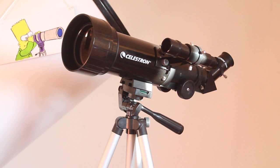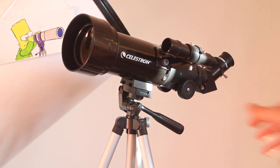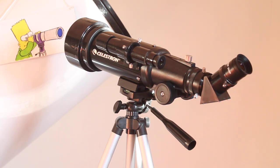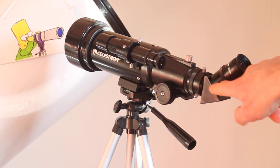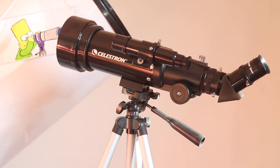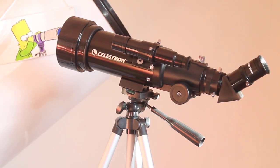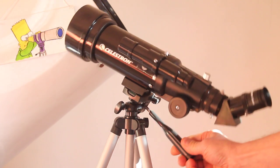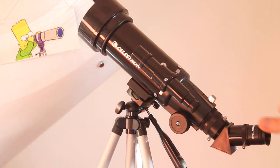So what is there left to replace? Well, it comes here with a 45-degree diagonal that gives an upright image, which is fantastic for terrestrial use or astronomy if something's not too high up in the sky. But if you're to look at something high up, you're having to really bend your neck down to look through the eyepiece.